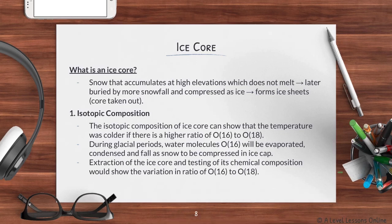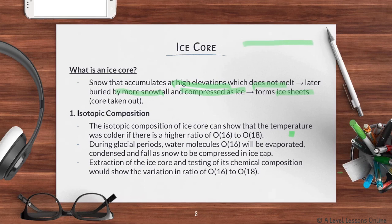Now we look at ice cores. An ice core is basically a very thick cylinder of ice — think of it like an ice cube. Snow that accumulates at high elevations and does not melt gets buried by more snowfall and compressed into ice. These pile up into very thick layers called ice sheets, and from ice sheets you can extract a core — a cylindrical sample of compressed ice.